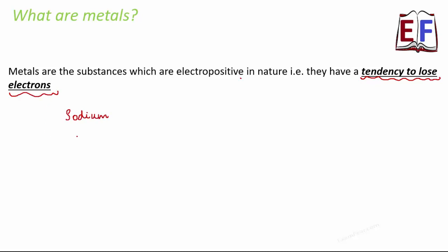Let's talk about sodium. Sodium is denoted by Na, and if we write its electronic configuration it is 2, 8, 1. So how many valence electrons do we have? One. Now what is generally the tendency of sodium? Any element would want to be in its stable state. Sodium would always want to get rid of this last one electron, and as a result it will always have a tendency to lose this one electron. The moment sodium loses one electron, it forms Na⁺.